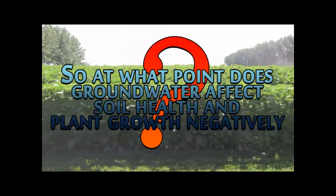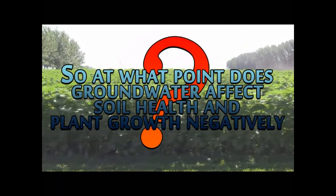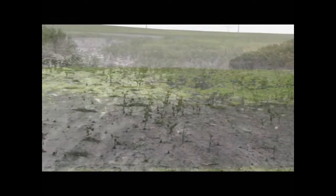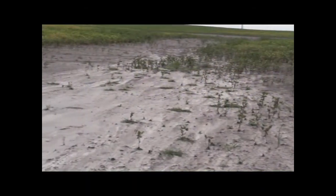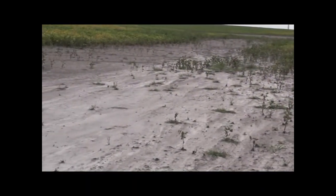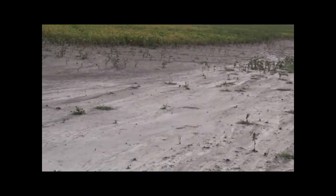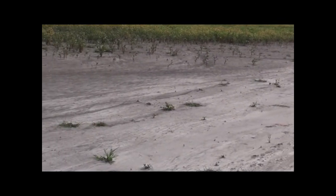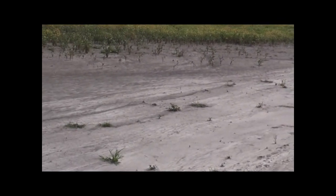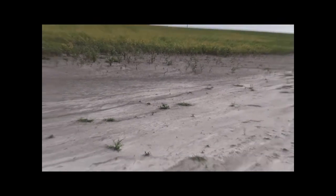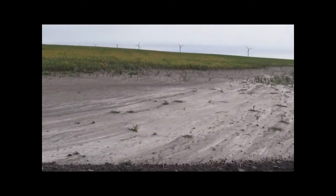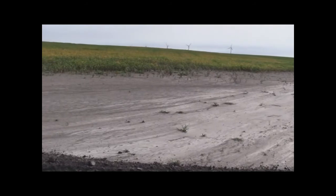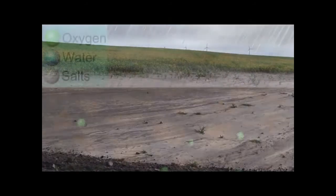So at what point does groundwater affect soil health and plant growth negatively? Poor quality groundwater will start affecting soil health and plant growth negatively when it contains excessive salts and/or excessive sodium, and also if a very shallow water table depth is maintained during most of the growing season, high enough to disturb the root zone balance between soil water and air.